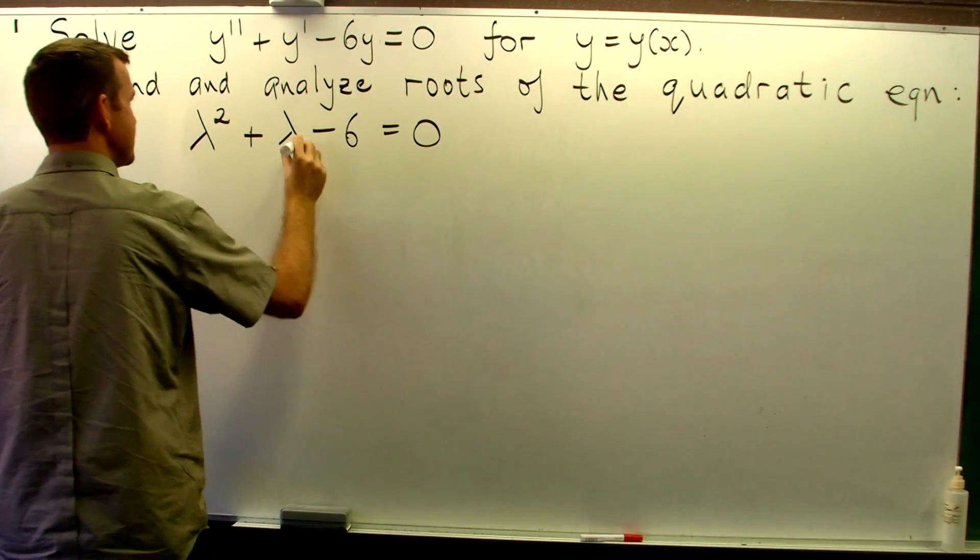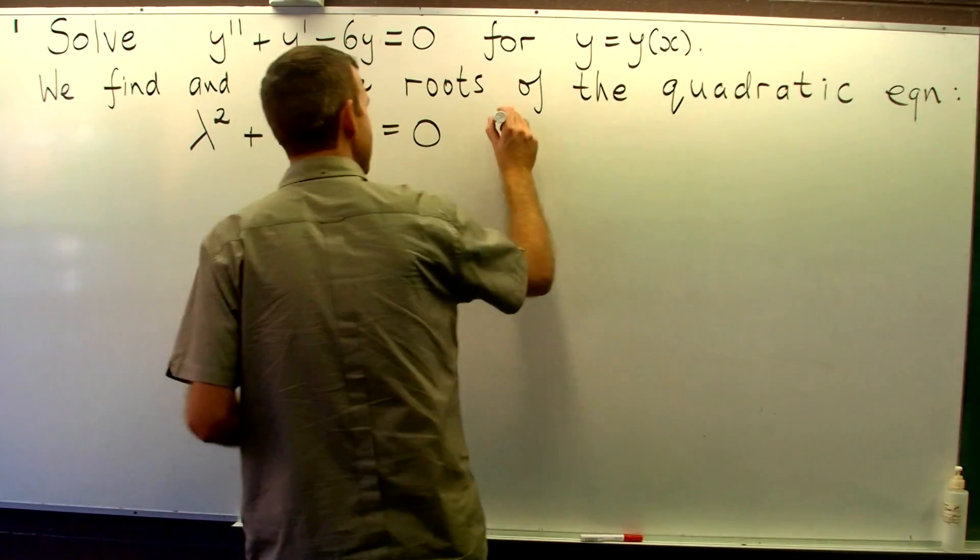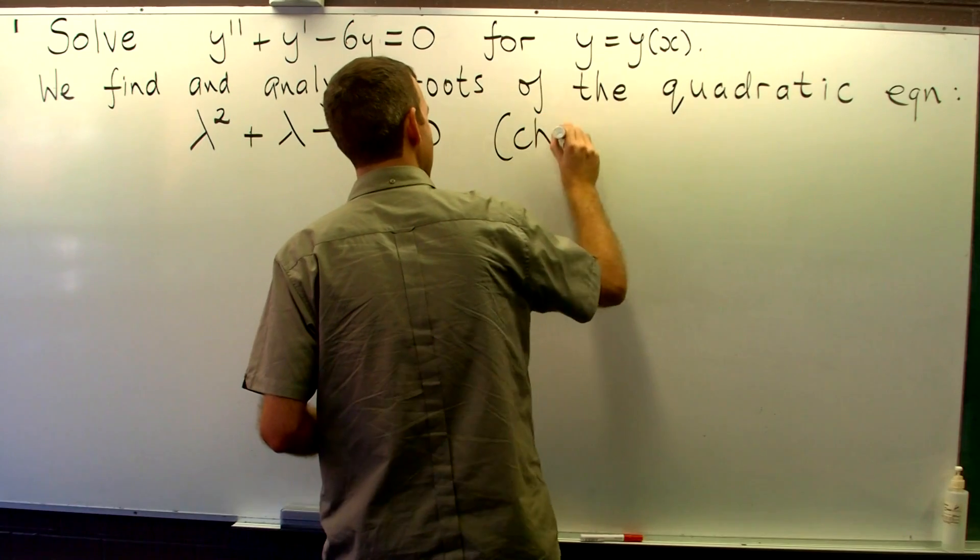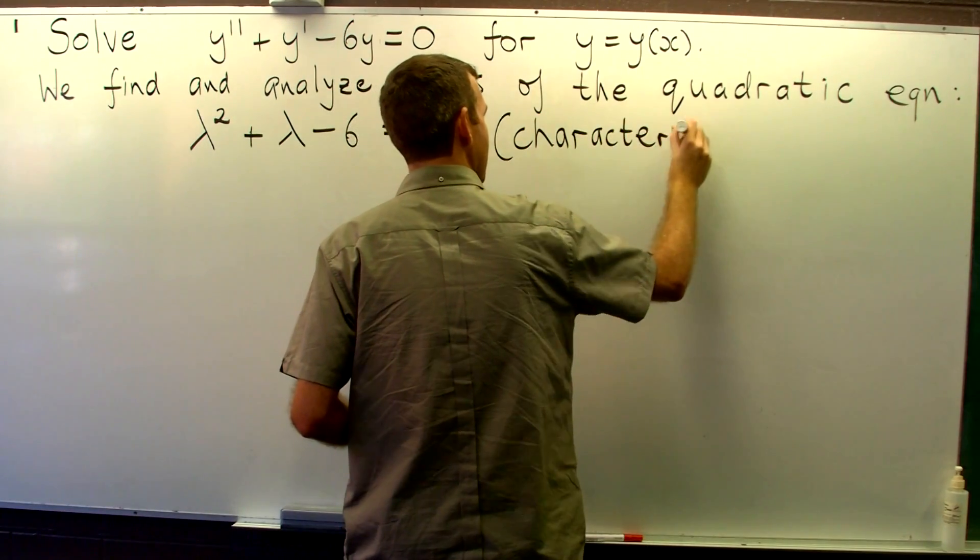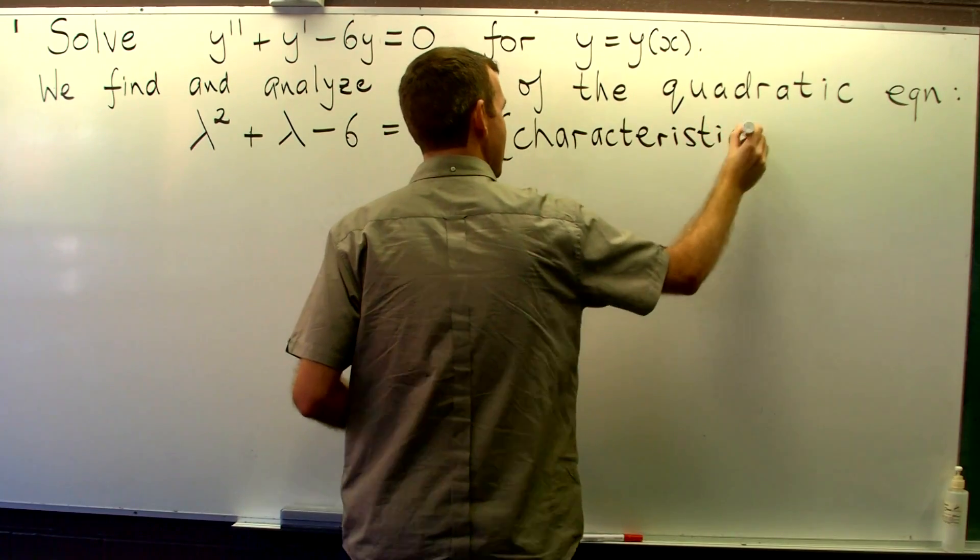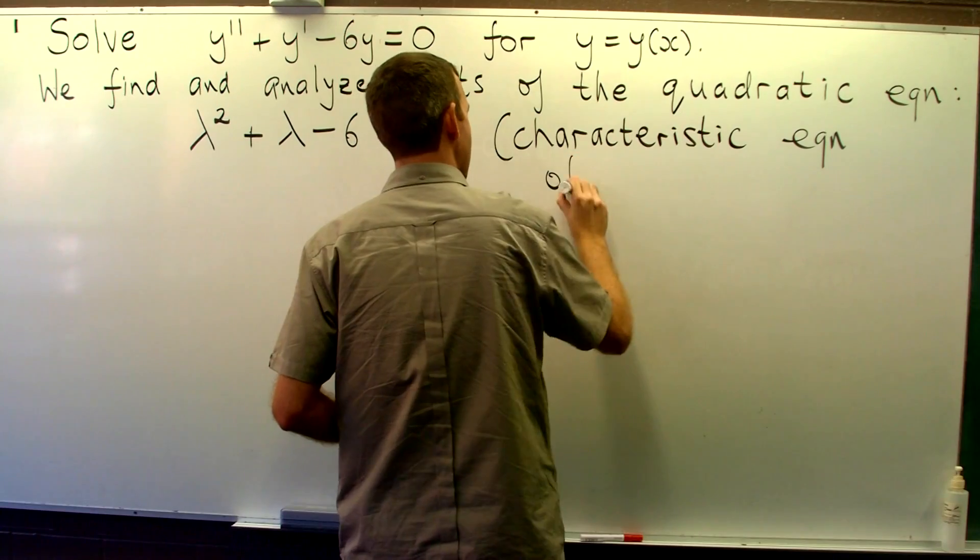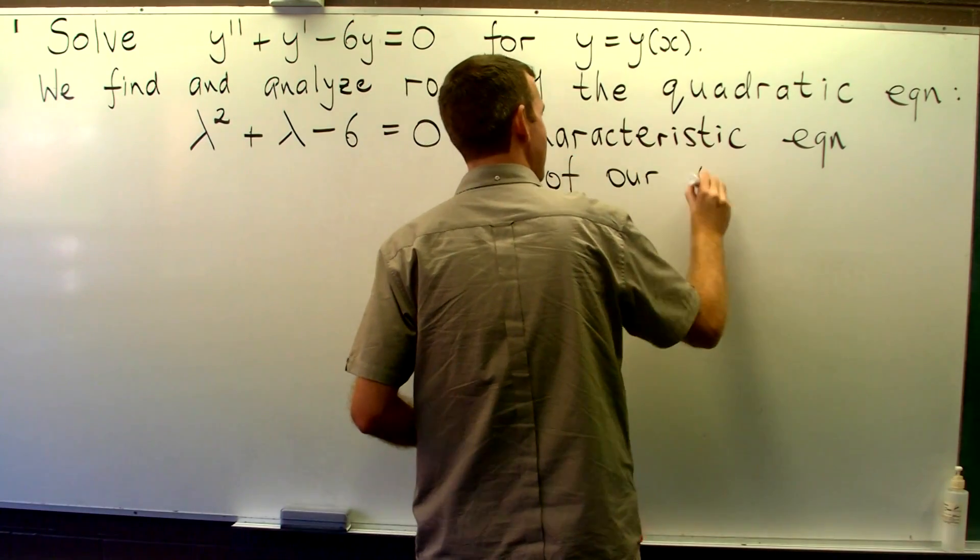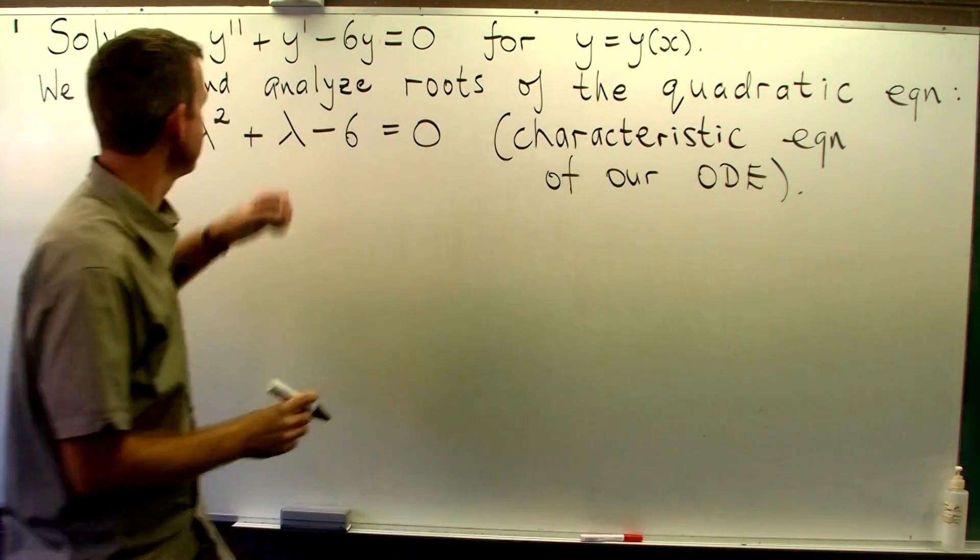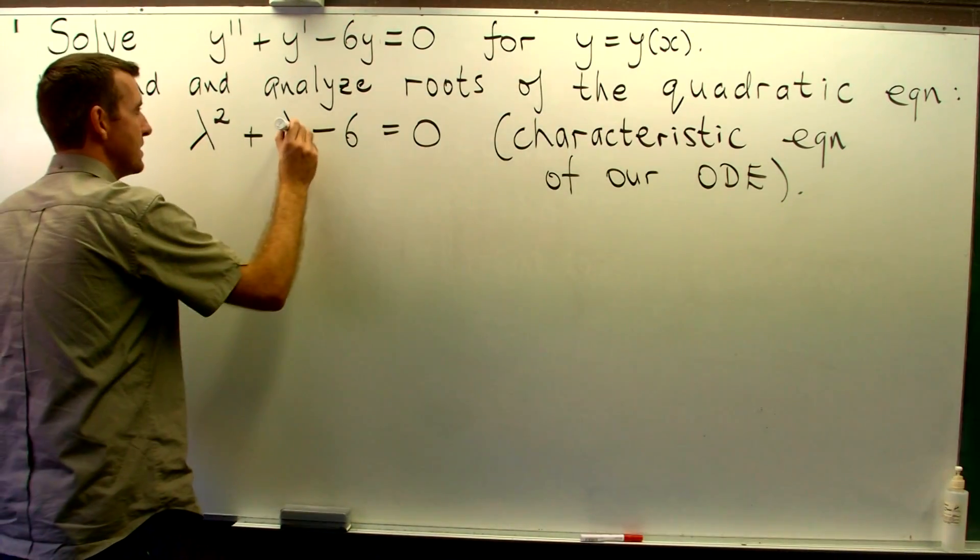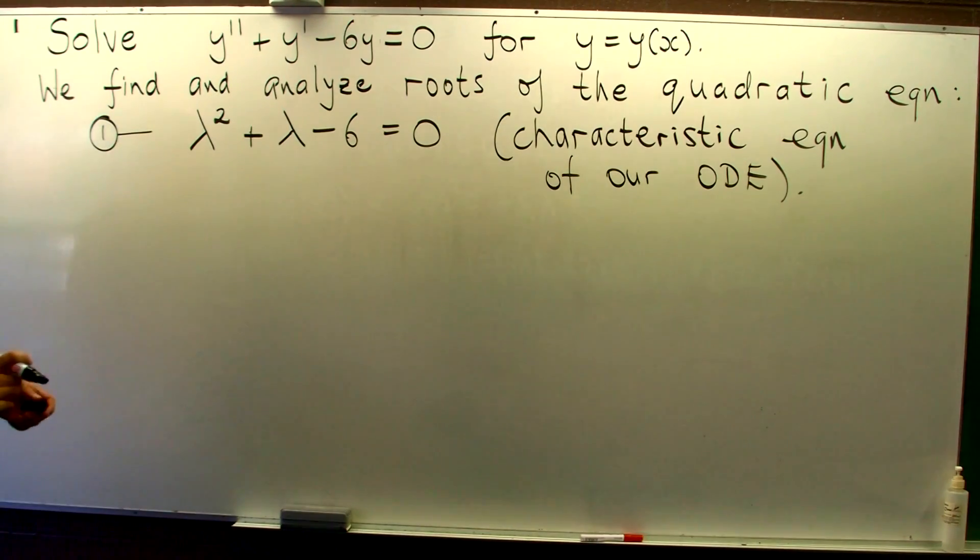Okay, so this is it. Now, this is known as a characteristic equation of our ordinary differential equation. So I'm going to call this equation 1.